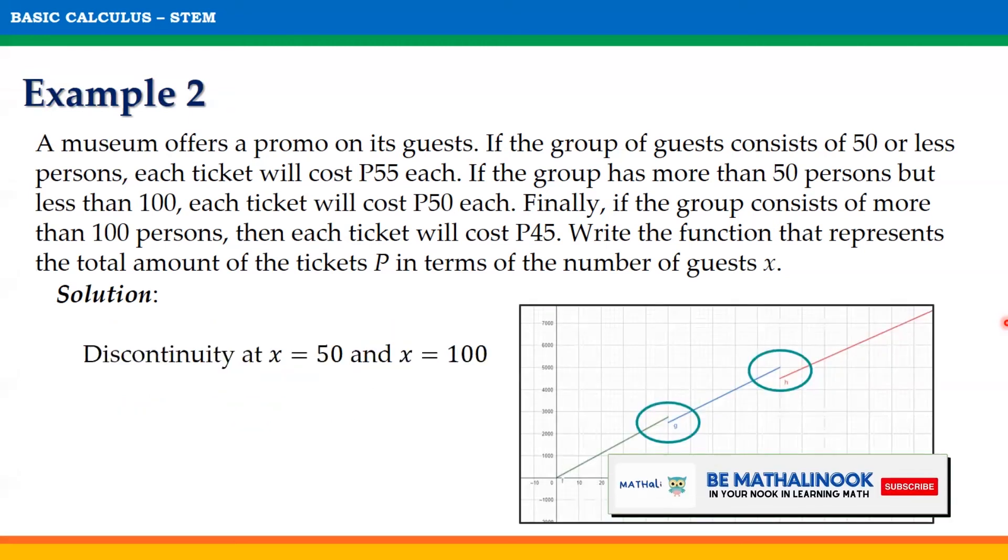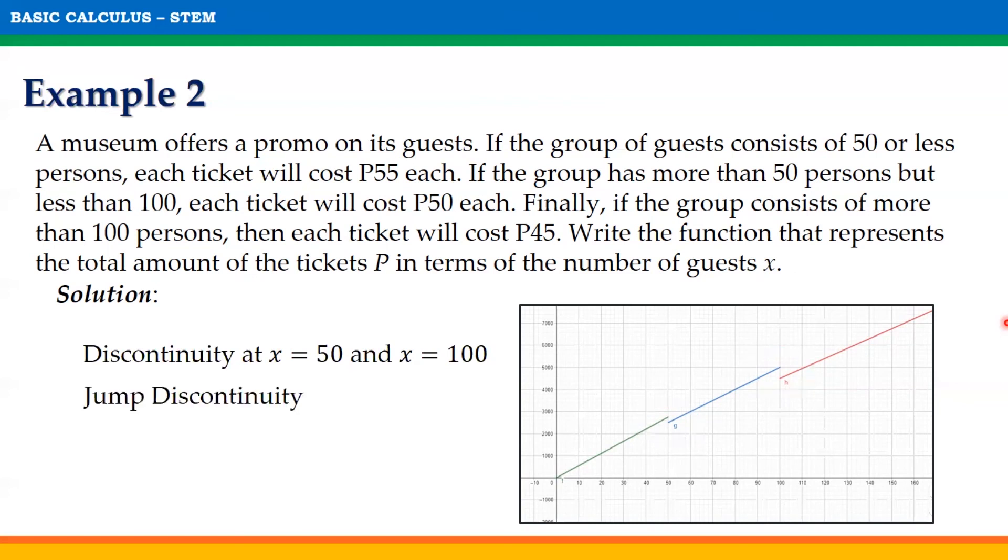The illustration shows the graph of the piecewise function P of x. Notice from the graph that there is a discontinuity at x equals 50 and x equals 100. And thus, it forms a jump or essential discontinuity. With this, we can claim that the function represented by the total amount of tickets forms a discontinuous function.